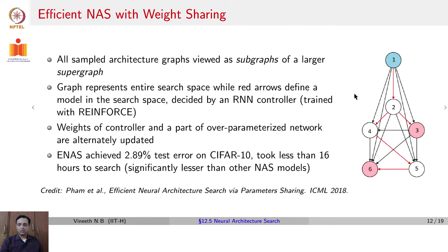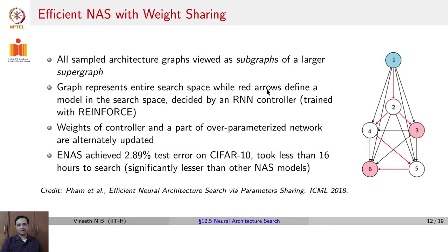EfficientNAS shows a way to do this by sharing parameters across child models. In this case, a supergraph of all possible sequences of operations is defined, and each architecture becomes a subgraph or a trajectory in this graph. A sequence of operations is decided by an RNN controller trained using reinforcement learning. The weights of the controller and those corresponding to chosen paths are trained in an alternating manner. This approach achieves about 2.89% test error on the CIFAR-10 dataset, close to state of the art, and took less than 16 hours to search for the right architecture — significantly less than other NAS-based models.